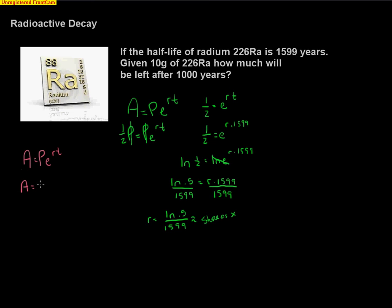If I go back to my A=Pe^(rt) formula again, I know that my amount after a thousand years, I'm starting with 10 grams times e. Now that r is what I'm going to use from my little equation that I had before. I'll have my regular time t that I'll plug in, and that t was a thousand years.